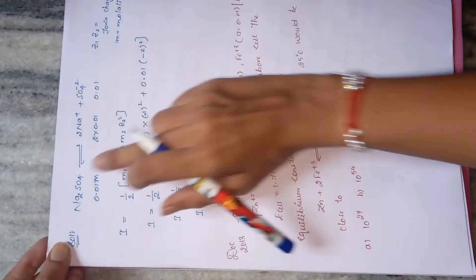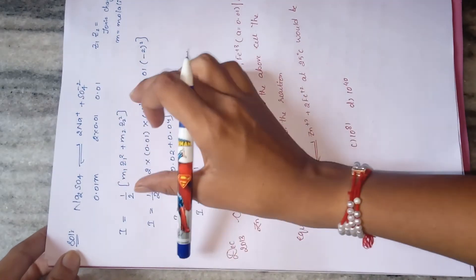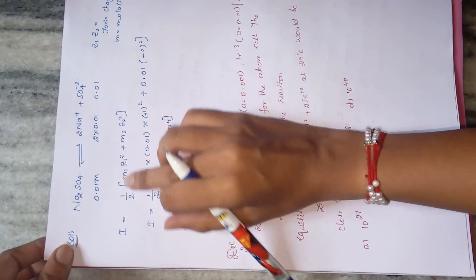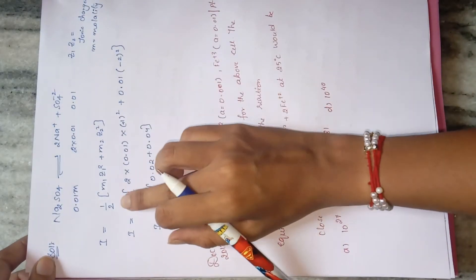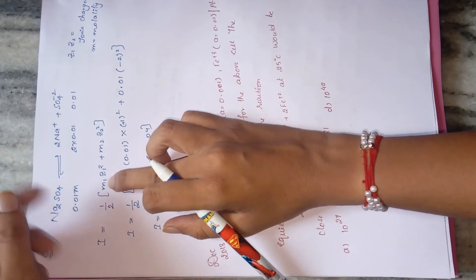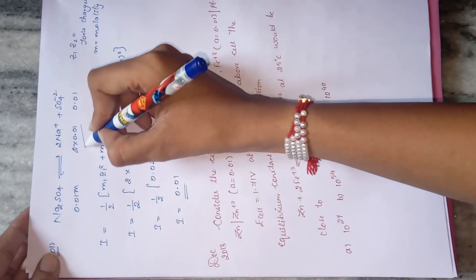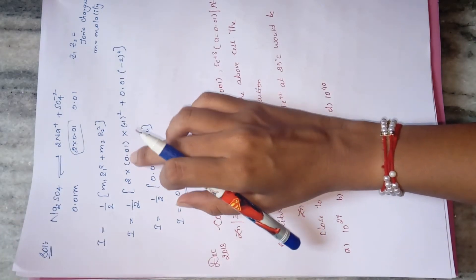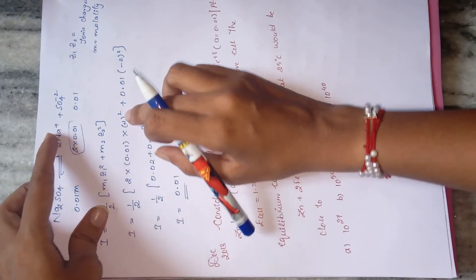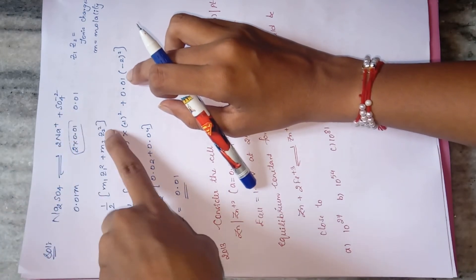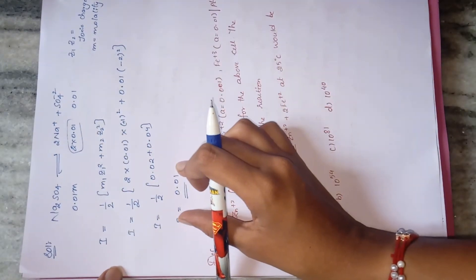For Na₂SO₄, the dissociation is: Na₂SO₄ → 2Na⁺ + SO₄²⁻. The ionic strength formula is: I = ½ × Σ(mᵢZᵢ²). Substituting: I = ½ × [2(0.01)(1²) + (0.01)(2²)] = ½ × [0.02 + 0.04] = 0.03. So the ionic strength for Na₂SO₄ at 0.01 molality is 0.03.